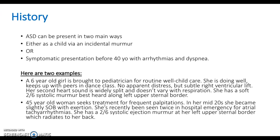The second history: a 45-year-old woman seeks treatment for frequent palpitations. In her mid-twenties, she became slightly short of breath with exertion. She's recently been seen twice in hospital emergency for atrial tachyarrhythmias. She has a 2/6 systolic ejection murmur at her left upper sternal border, which radiates to her back. Another important thing to note is that 25% of patients with an ASD also have Down syndrome.